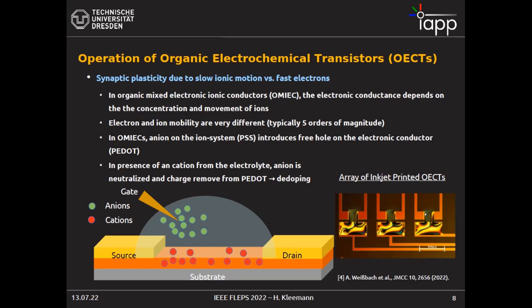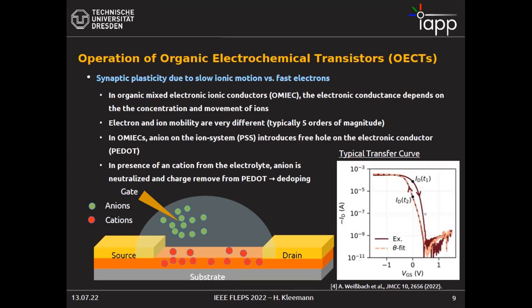This is how it looks in reality in our lab. We use inkjet printing techniques to define source, drain, and gate electrodes by photolithography, and we use inkjet printing to place PEDOT:PSS in the channel. The colorful thing on top is a printable solid-state electrolyte. This gives a typical transfer curve with very low driving voltage, a nice off-state low current and on-state high current.